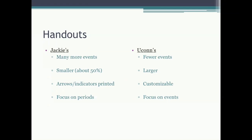Now let's compare the different sets of instructions. Jackie's has many more events; the total timeline will be about 50% smaller, it uses arrows and indicators to mark periods, and the focus is more on periods in Earth's history rather than events themselves. The Yukon instructions will have fewer events, the timeline will be larger, it's a little bit more customizable, and it focuses more on events rather than periods.